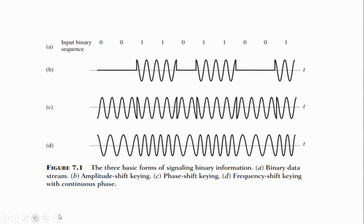This is the binary input data. In analog modulation, we consider the analog input. In digital modulation, we consider the digital input. Digital modulation is mainly classified into amplitude shift keying, frequency shift keying, and phase shift keying.